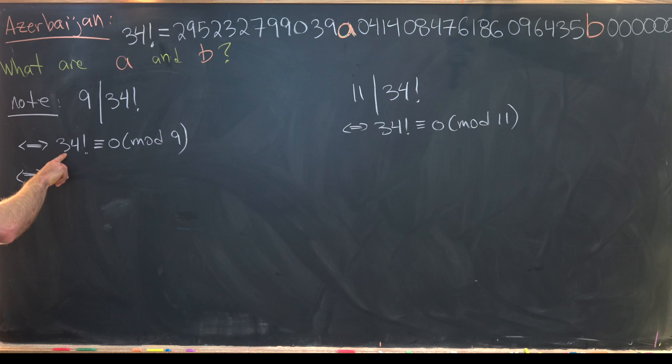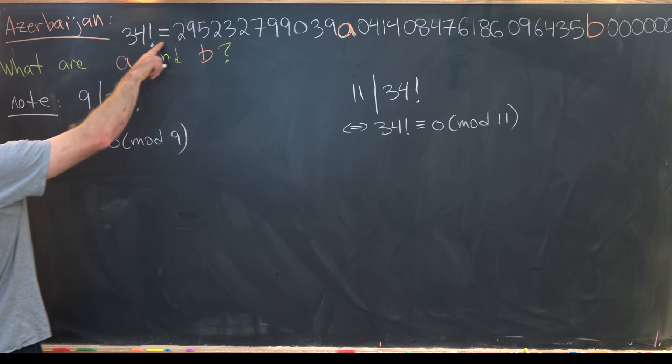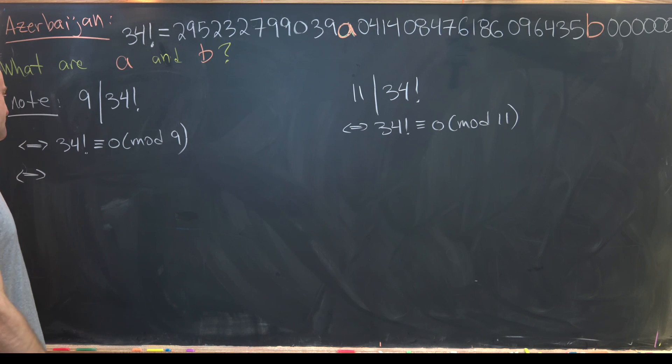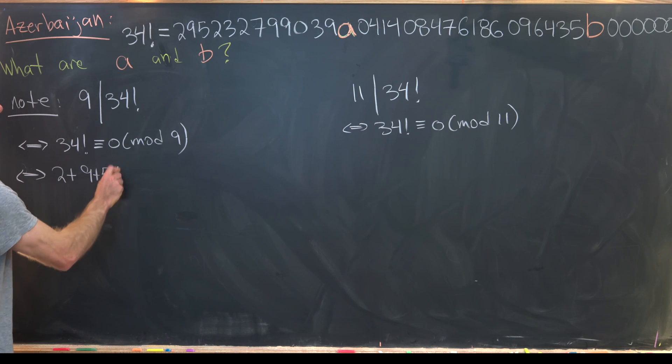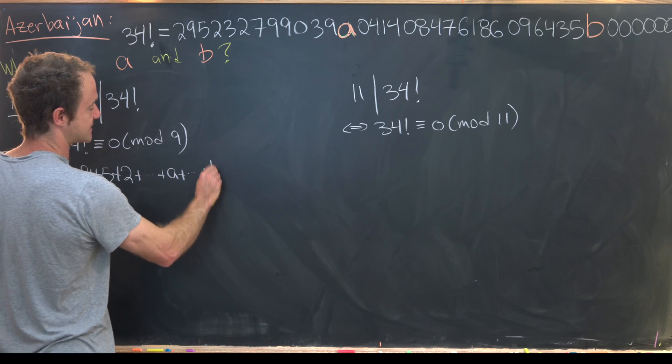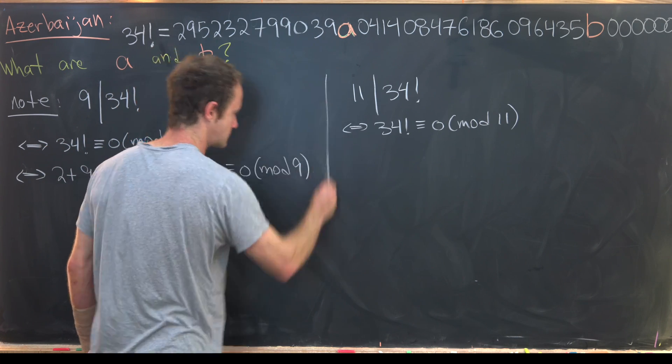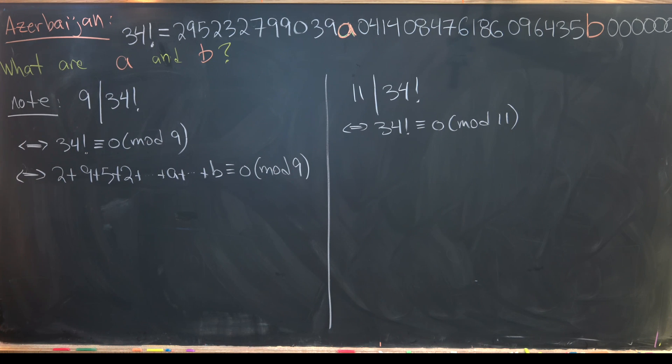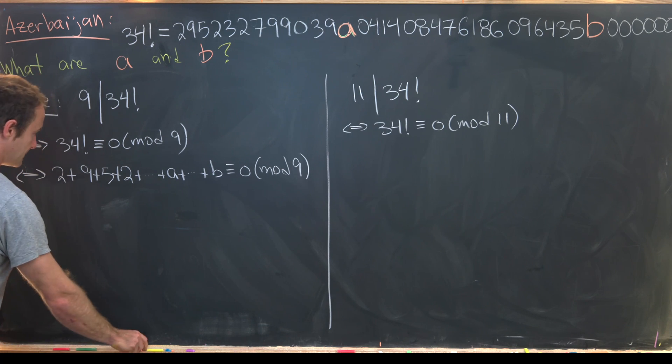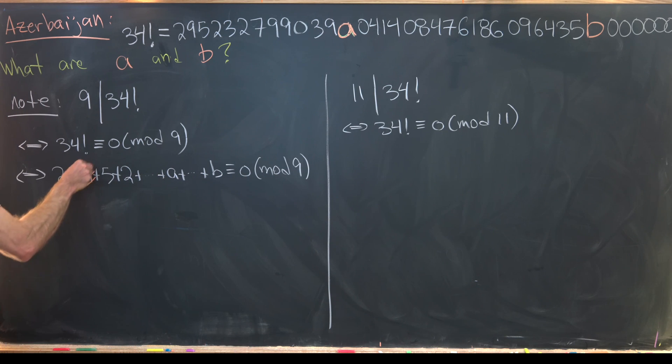So let's maybe use that. So like I just said, since 34 factorial is congruent to 0 mod 9, that means the sum of these digits is also congruent to 0 mod 9. So in other words, 2 plus 9 plus 5 plus 2 plus dot dot dot plus a plus dot dot dot plus b is congruent to 0 mod 9. And again, this may seem like something that's almost impossible to work with, but we can make simplifications as we go. So notice 9 is congruent to 0 mod 9. So we can just cancel this off immediately.